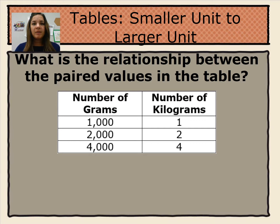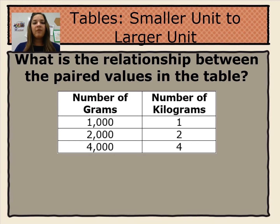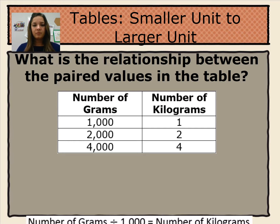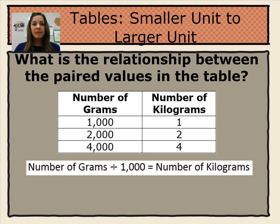We can use tables to help us understand the conversion between different units within the same system. Here we're looking at the number of grams converted to the number of kilograms. The relationship shows that 1,000 grams equals 1 kilogram, 2,000 grams equals 2 kilograms, and 4,000 grams equals 4 kilograms. To convert from grams to kilograms, we take the number of grams and divide it by 1,000.